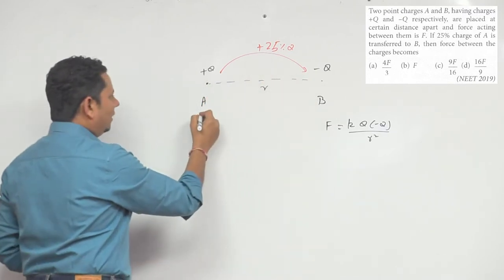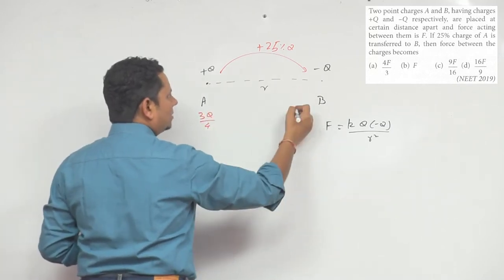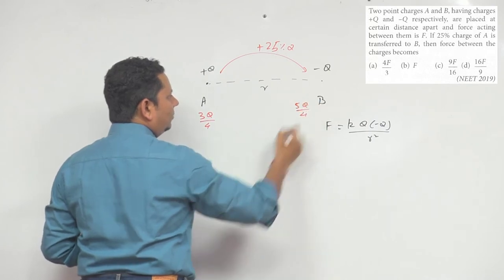becomes 3Q/4. This charge becomes... so this will be 5Q/4.